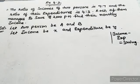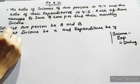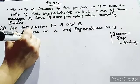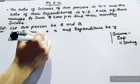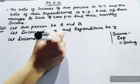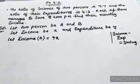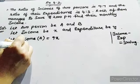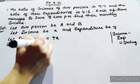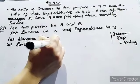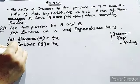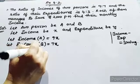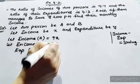Let income of A is 9x and let income of B is 7x. Let income of B is 7x.